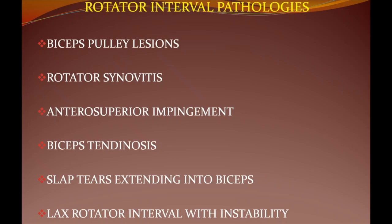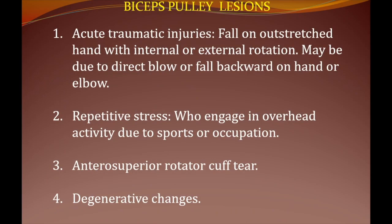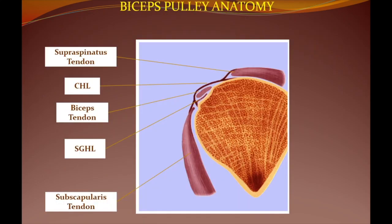Biceps pulley lesions result from acute traumatic injuries, repetitive stress, anterosuperior rotator cuff tear, or degenerative changes. Revisiting the key diagram: supraspinatus, biceps tendon in the groove, subscapularis; coracohumeral ligament above the tendon, SGHL below; CHL laterally attached to the supraspinatus tendon, medially converging with the SGHL, with this complex attached to the subscapularis tendon. Tear of important rotator cuff muscles can cause biceps pulley tear and instability of the biceps tendon.